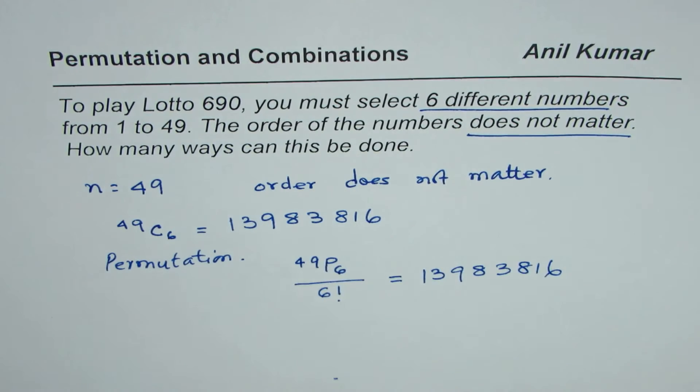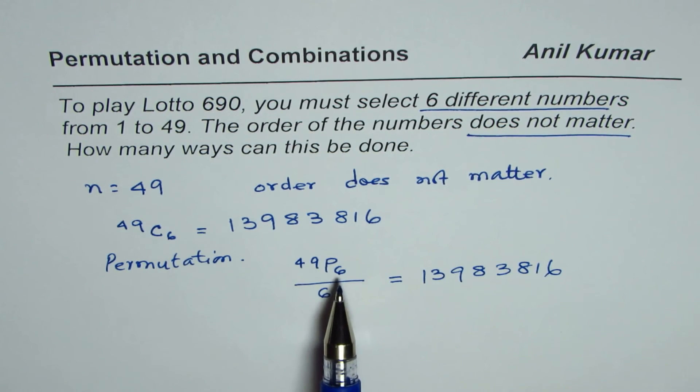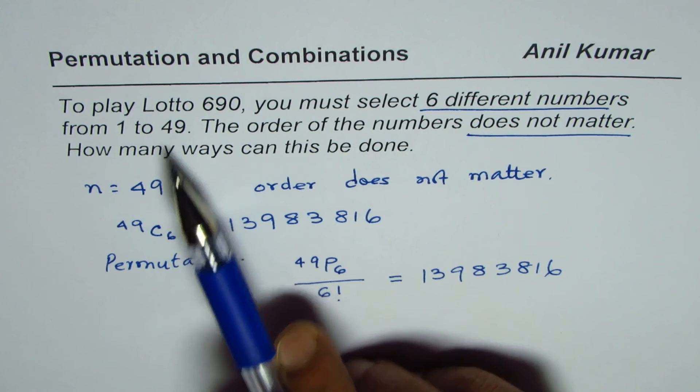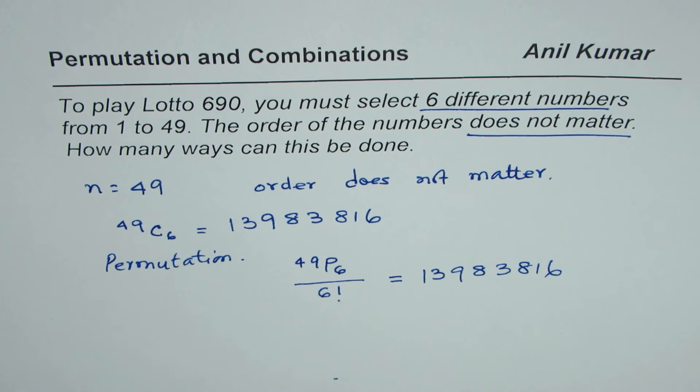So we get exactly the same answer. You arrange or you select 6 numbers out of 49 and these numbers, since the order is not important, could be arranged in 6 factorial ways.